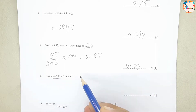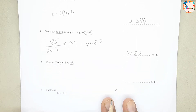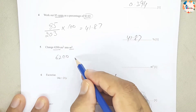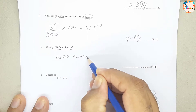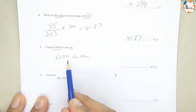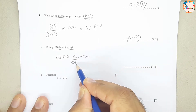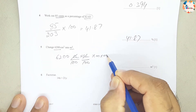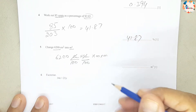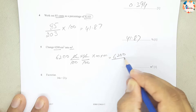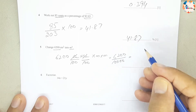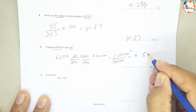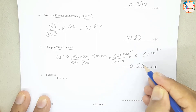Question number 5: change 6200 centimeters squared into meters squared. We divide by 100 twice — once for each dimension — giving us 6200 divided by 10,000, which equals 0.62 meters squared.